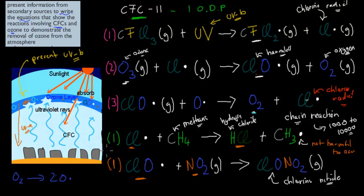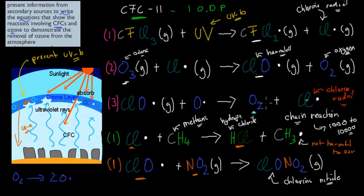So to summarize: you need to know the first three steps — CFC-11 reacting with UVB to form a chlorine radical, that radical attacking ozone to form a chloro-oxygen radical, and the chloro-oxygen radical combining with an oxygen radical to reform the chlorine radical and continue the chain. The two termination equations you should understand and appreciate, but don't need to memorize. That's what this dot point is all about. I hope that was useful.